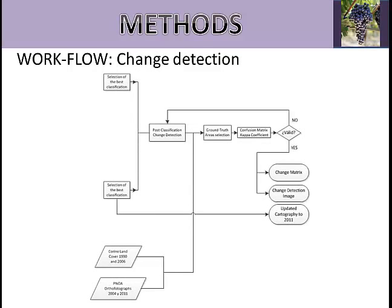Once the suitable classification of each year was obtained, the next step is the change detection. This method is based on comparing the two classified images pixel by pixel. Like the classified images, an accuracy assessment is needed to verify our change detection. Ground truth areas were selected from areas where vineyard changed to other coverage, where other coverage became vineyard, and areas where vineyard did not change. The Kappa statistic, overall accuracy, and producers' and users' accuracy were also calculated for this accuracy assessment.